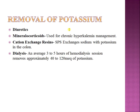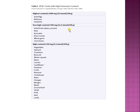Three to five hours of hemodialysis removes approximately 40 to 120 milliequivalents of potassium. In summary, when managing hyperkalemia: if EKG changes are present, give calcium chloride or calcium gluconate; then redistribute potassium with insulin-dextrose, sodium bicarbonate, and beta-2 agonists; then remove potassium via diuretics, cation exchange resins, or dialysis. A newly FDA-approved agent called patiromer works through a different mechanism to eliminate serum potassium.